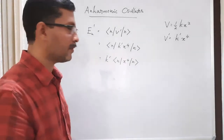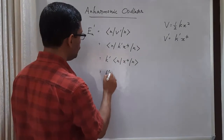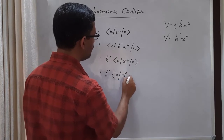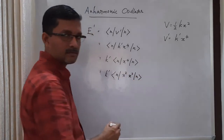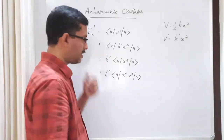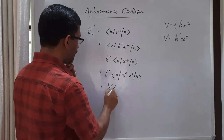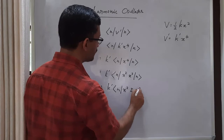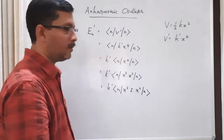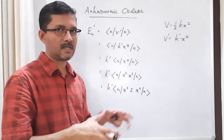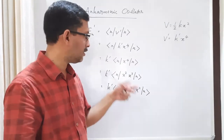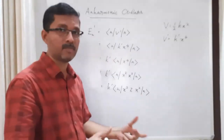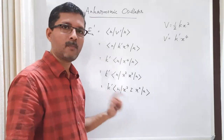I am trying a different way here. We write ⟨n|x⁴|n⟩ as x² acting twice. Let me introduce an identity in between the two x² operators. We know that the eigenstates of the harmonic oscillator Hamiltonian form a complete set, so we can introduce the completeness condition here.